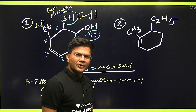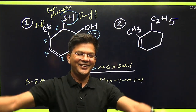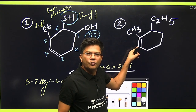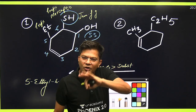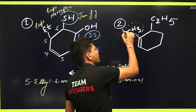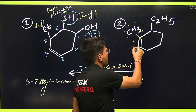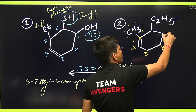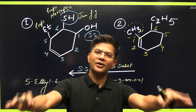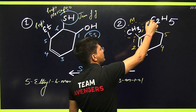Now let's come to the second compound. Pause the video and think from where you are going to number it. Definitely ninety percent of students must have given number one to this carbon, then two, three — but it's not correct. This carbon is attached to a substituent, so I have to give it number one, and then number: one, two, three, four, five, six. Once the numbering is done, half the work is already completed.